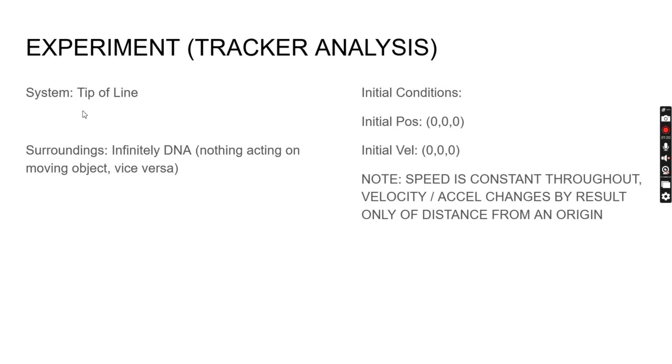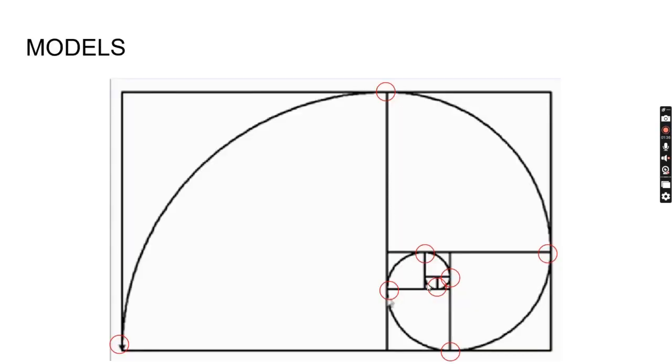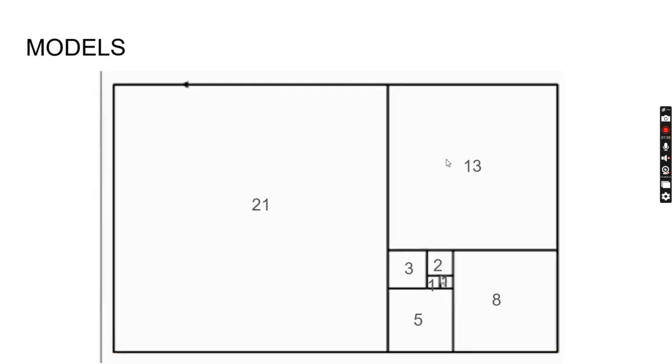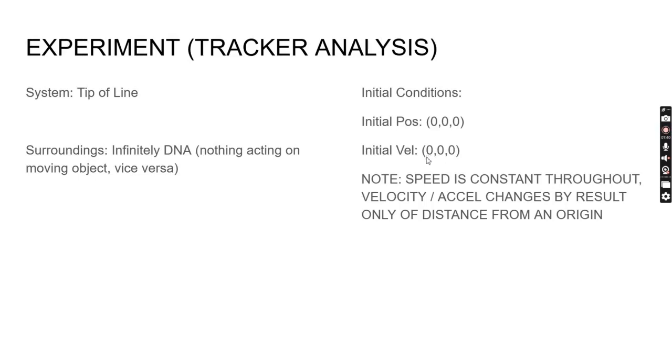Experiment: The system is just the tip of the line. Surroundings didn't really matter because the line isn't being affected by anything. Initial conditions: origin at this position here, initial velocity starts at zero, speed is constant throughout, and velocity/acceleration only change by result of distance from the origin.